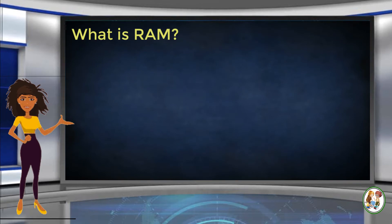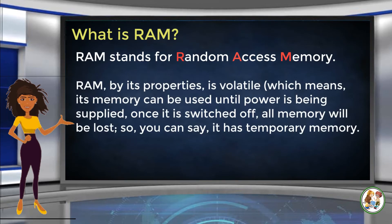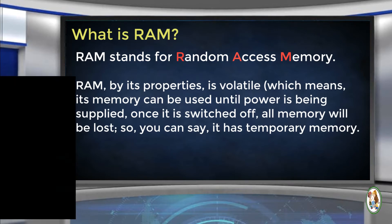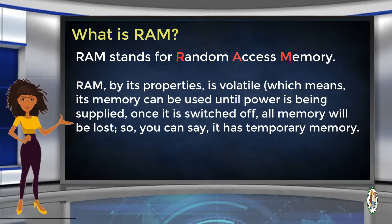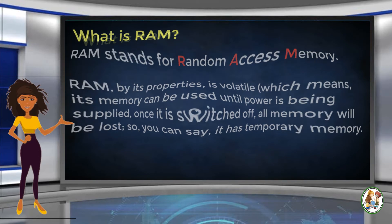First, what is RAM? RAM stands for Random Access Memory. RAM, by its properties, is volatile, which means its memory can be used only until power is being supplied. Once it is switched off, all memory will be lost. So you can say it has temporary memory.